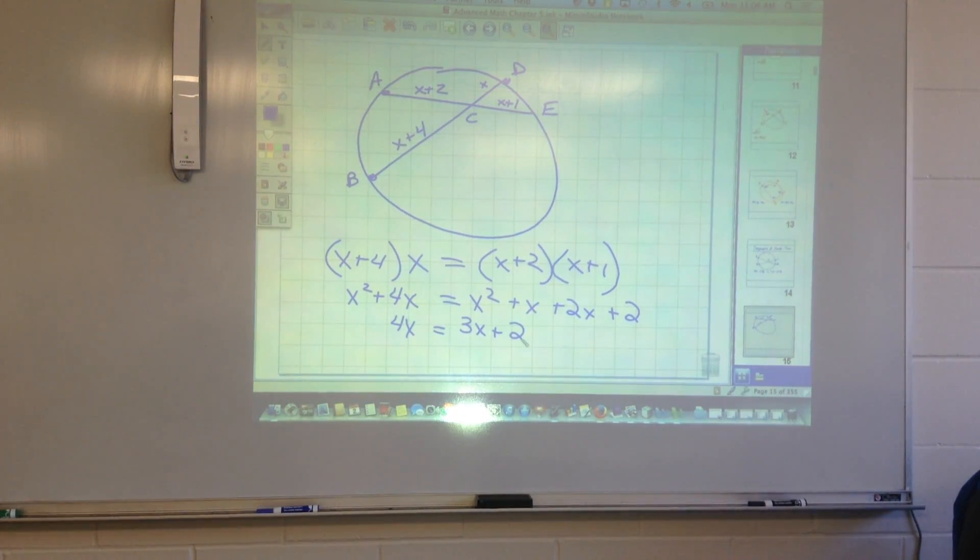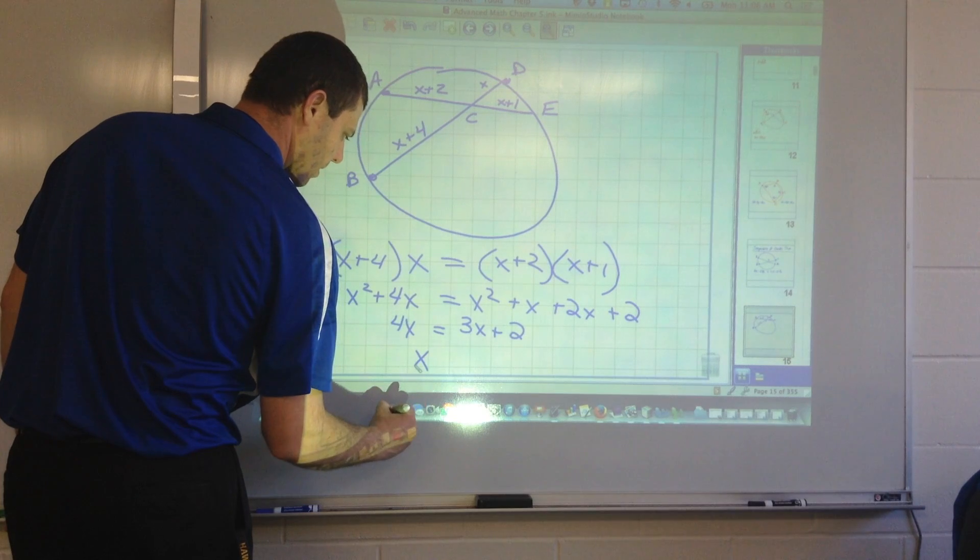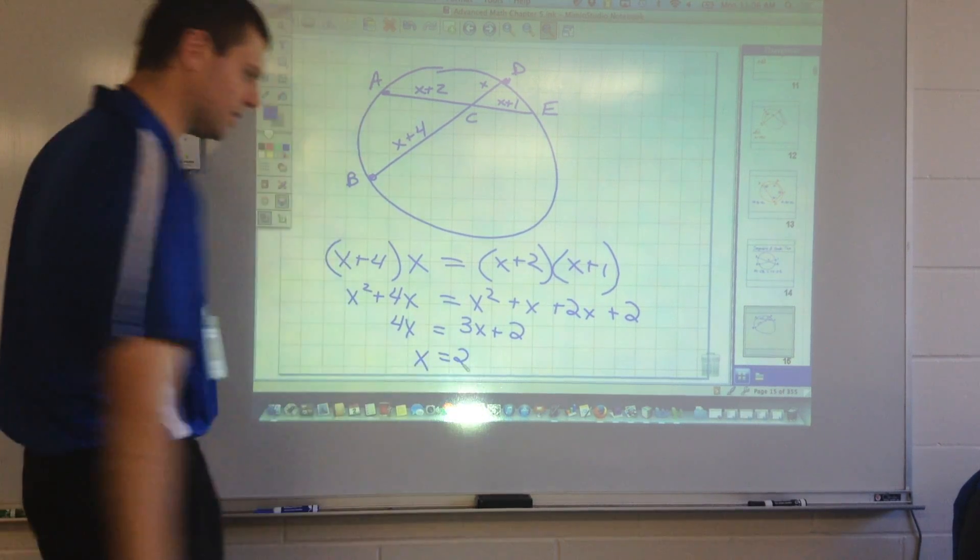So now I have 4X equals 3X plus 2. Now what do you think? Subtract 3X from both sides. I want to get all my X's onto the same side, so let's subtract 3X from both sides. Now what do I get? 1X equals 2, or just X equals 2?